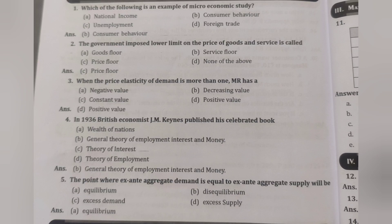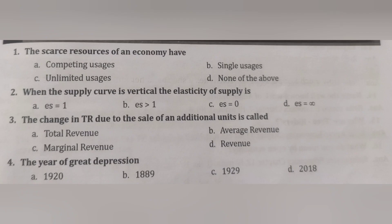The point where ex-ante aggregate demand equals ex-ante aggregate supply is the equilibrium point. The scarce resources of an economy have competing usages. When the supply curve is vertical, elasticity of supply equals zero. The change in TR due to the sale of an additional unit — whenever 'additional' appears, the answer is marginal. The year of the Great Depression is 1929.